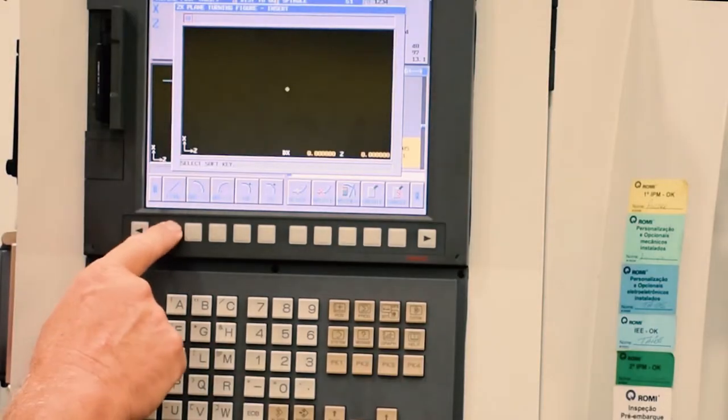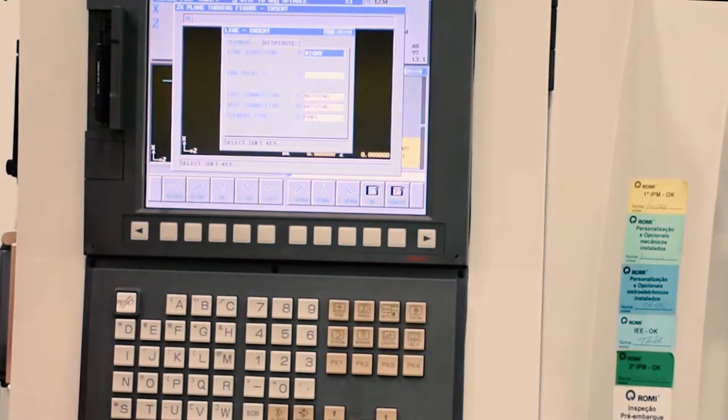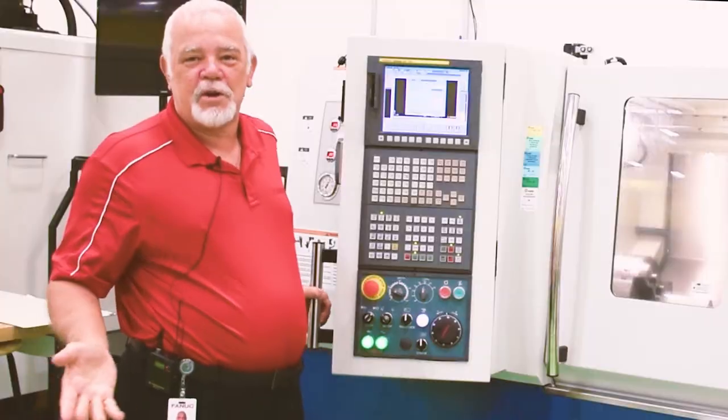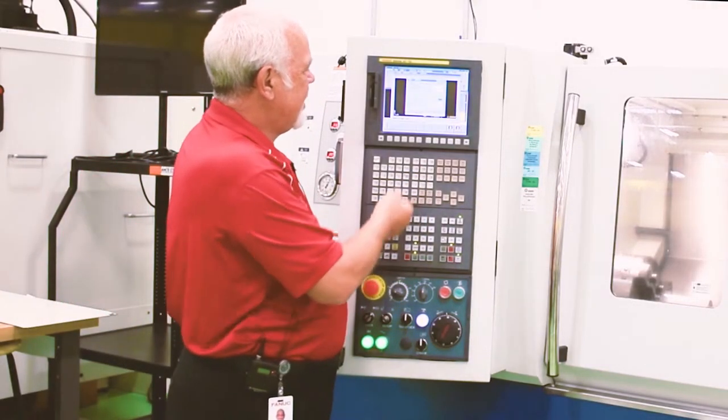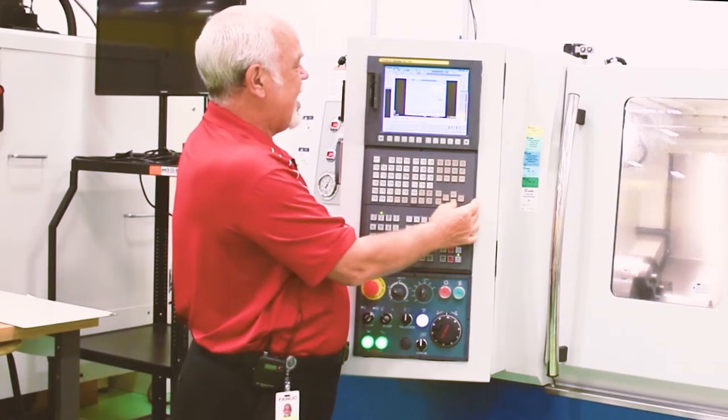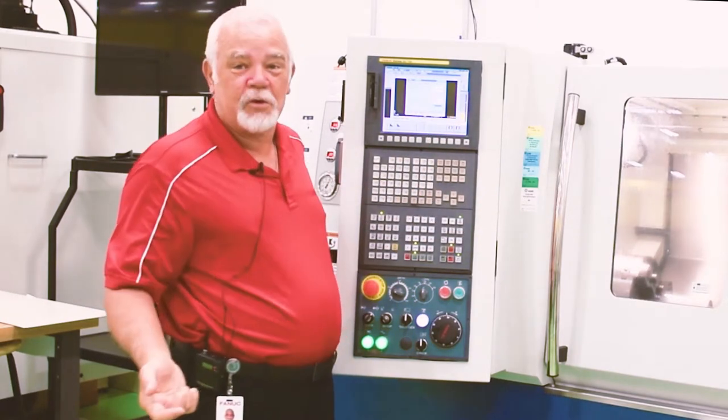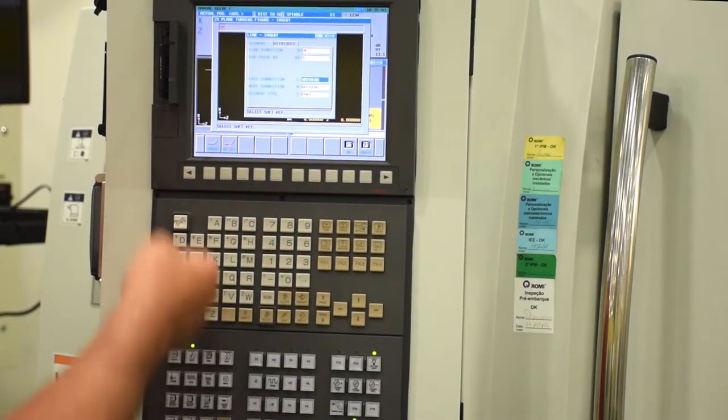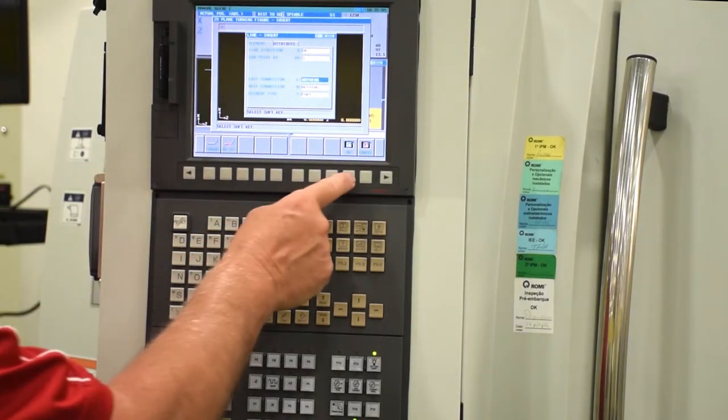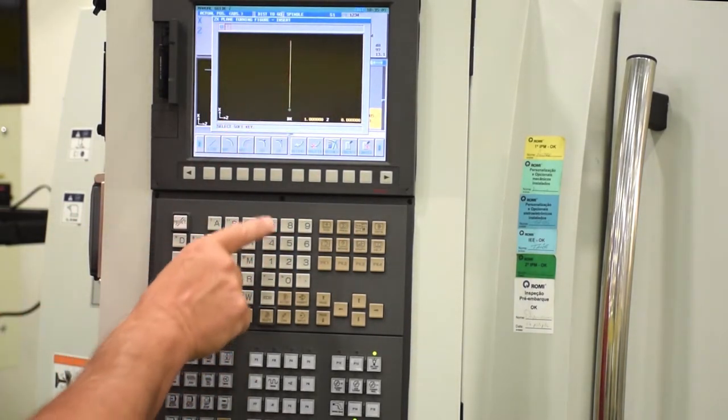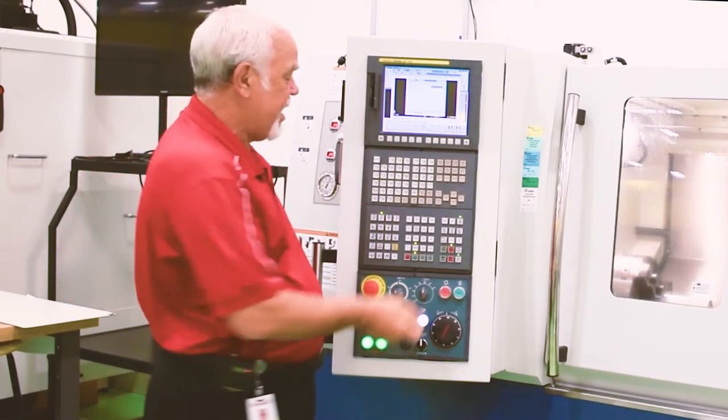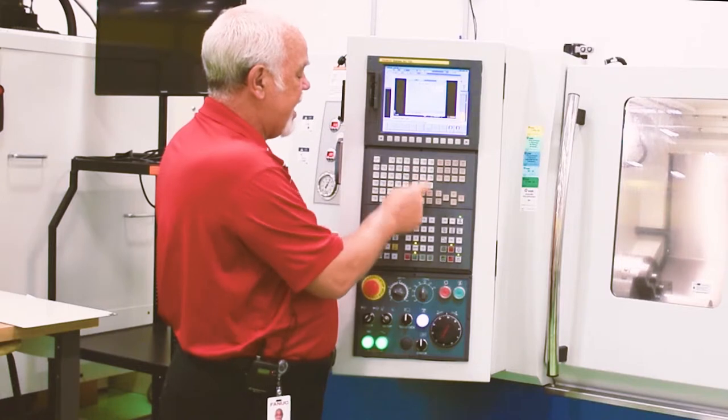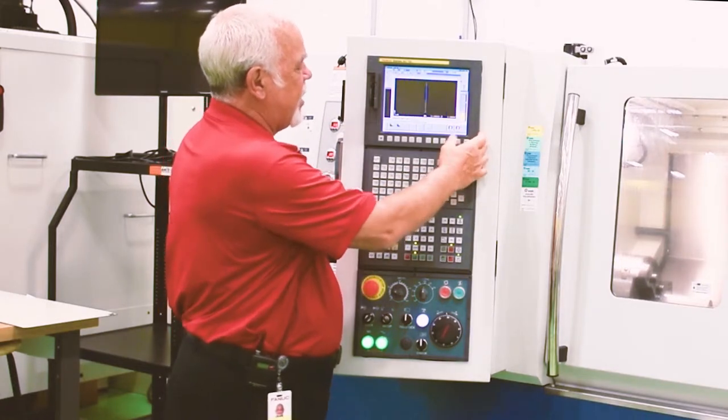So we'll do a line going up. The first diameter we're going to turn is 25.4 millimeters. It's not tangent to anything and it's part of the actual part we're defining. We say okay. It draws a line. We want to put a corner chamfer on that. All you do is tell it the size of the chamfer. So 1.5 millimeters.